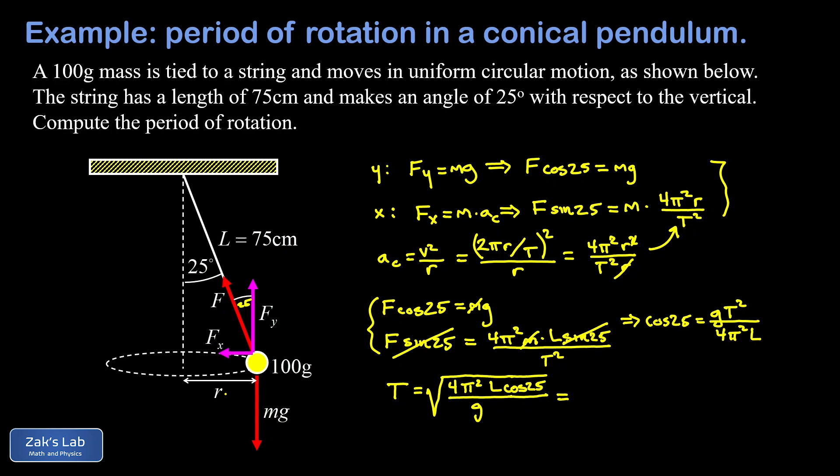You could pull out the 4π² from the interior of the square root and that would become a 2π outside the square root, but we may as well just plug in our numbers now. We get 4π² times l—that's 0.75, just switching to SI units there—times cosine 25 degrees, all divided by g. We'll just use the approximation 9.8. When I run the numbers on this to three significant digits I get a period of 1.65 seconds.